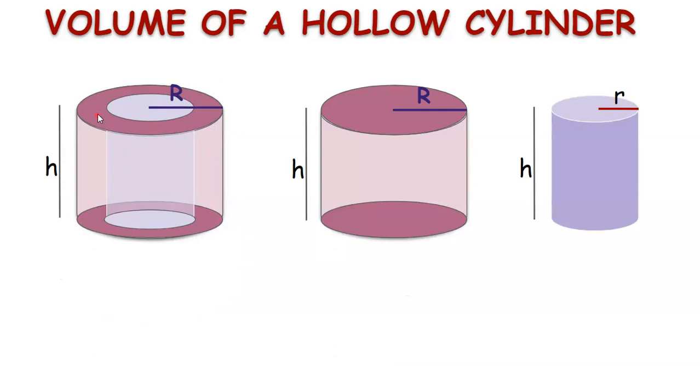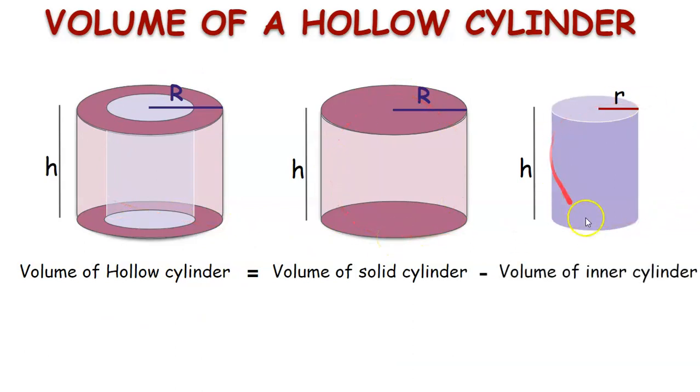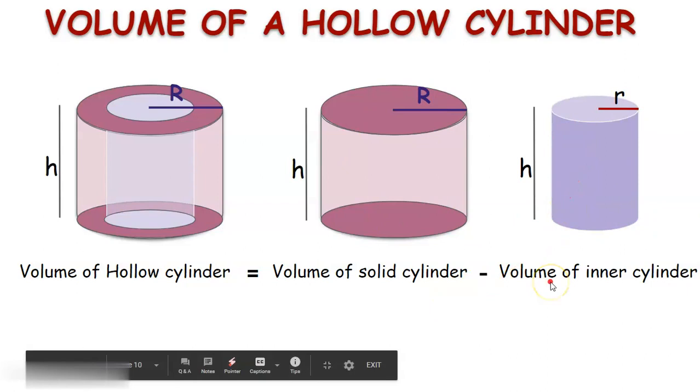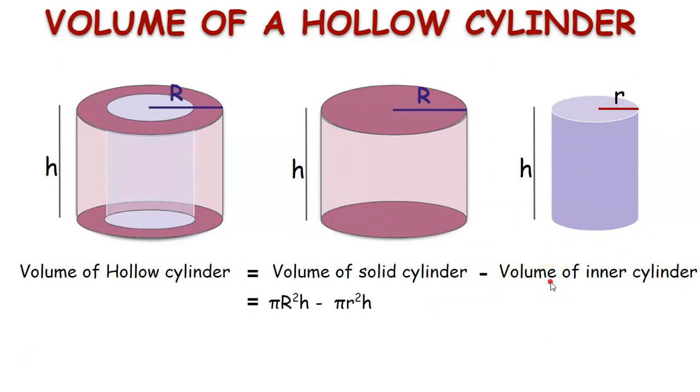Okay, now the volume of the hollow cylinder is equal to the volume of solid cylinder minus the volume of the inner cylinder, which is nothing but pi capital R square h minus pi small r square h. By taking pi and h as common in both,